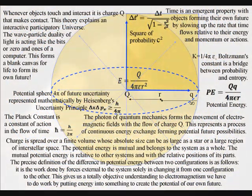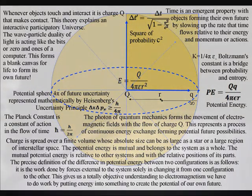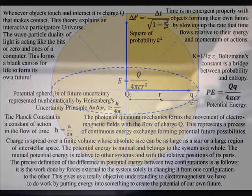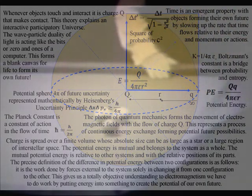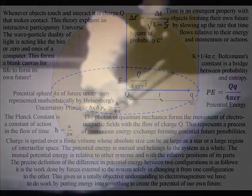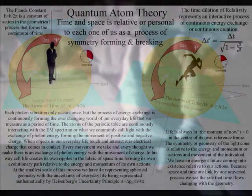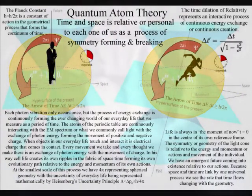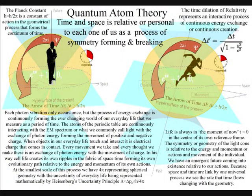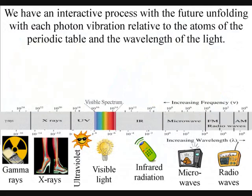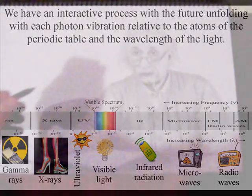With charge being an innate part of all matter, when objects touch it is charge that makes contact, and when atoms bond and break there is an exchange of photon energy with the movement of charge. In this theory we have an emergent future unfolding with each photon-electron interaction, with the wave-particle duality of light and matter in the form of electrons forming a blank canvas that we can interact with.